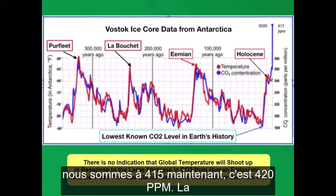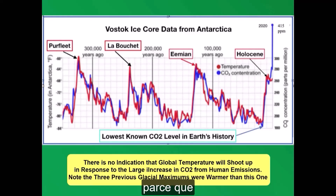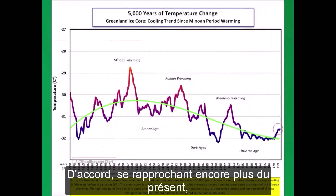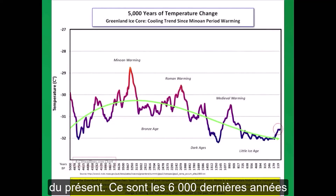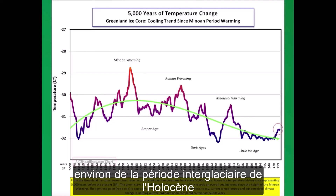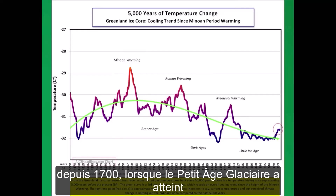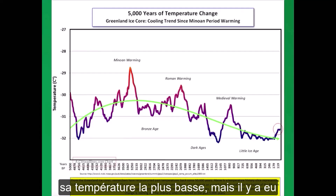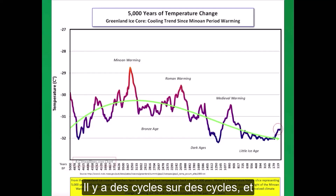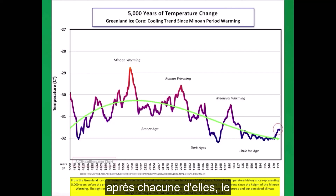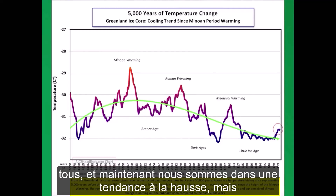The CO2 is going up because of our emissions, but it is not causing the temperature to go up. Coming even closer to the present — this is the last 6,000 years or so of the Holocene interglacial period that we are in now. The temperature is going up now; it has been since 1700 when the little ice age came to its lowest temperature. But it has been cooling in fits and starts — there are cycles on cycles. These are thousand-year cycles between the Minoan, the Roman, and the medieval warm period, with cooling periods after each one. The little ice age was the coldest of all. And now we're in an upward trend, but there's no evidence that it's actually caused by our CO2 emissions.